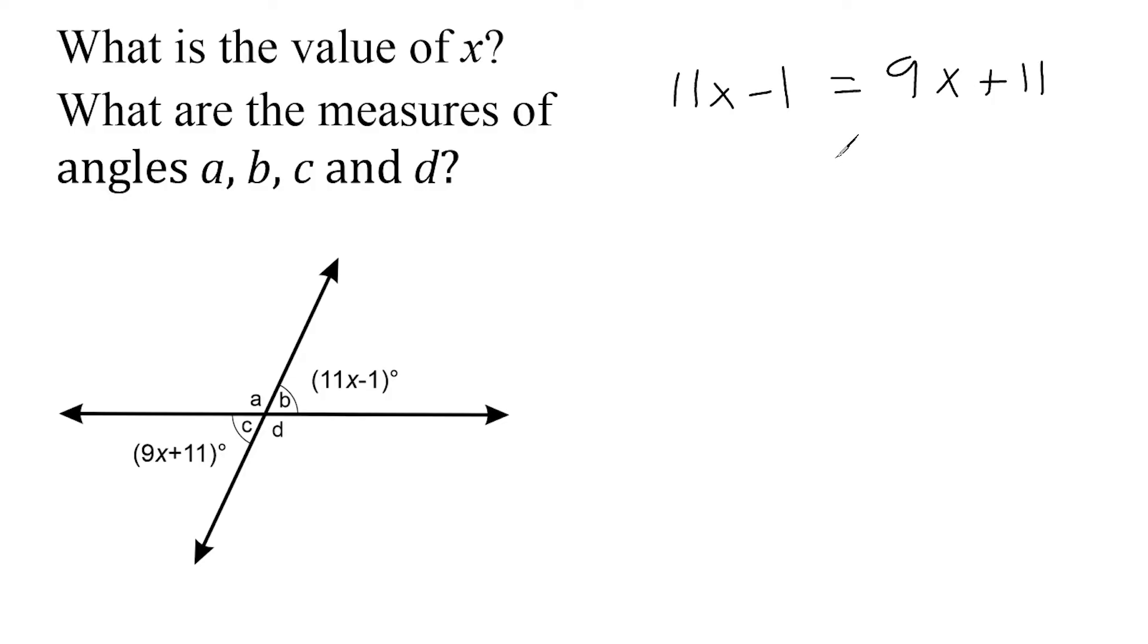Now all we have to do is isolate our variable x to figure out what it's equal to. We're going to begin by putting all of our x terms on the left-hand side of our equal sign and all of the constants on the right side. So we already have an x term on the left side, 11x, so we're just going to bring it down.